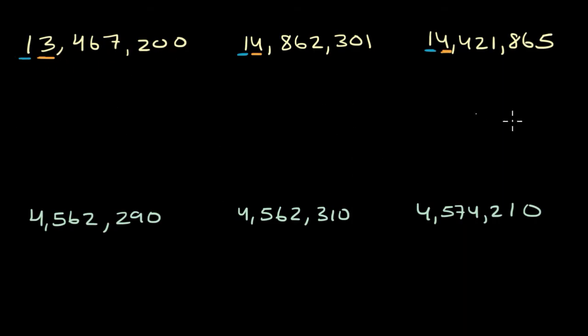So if we're ordering from greatest to least, it's going to be over here: 13,467,200. We've used that one up. Now we're just going to compete between these two to see which one is larger and which one is smaller.